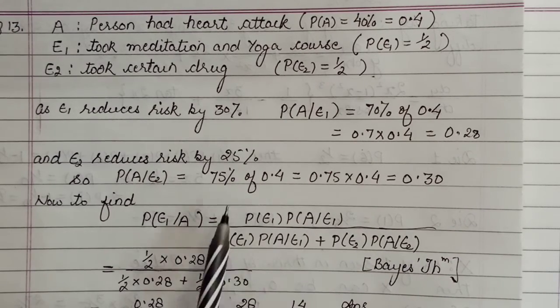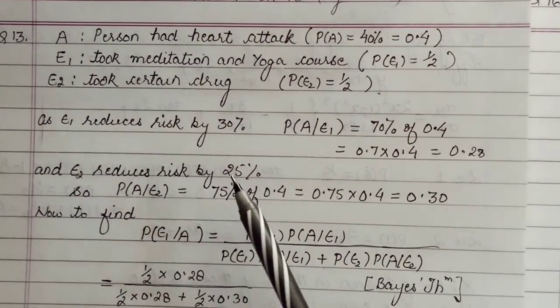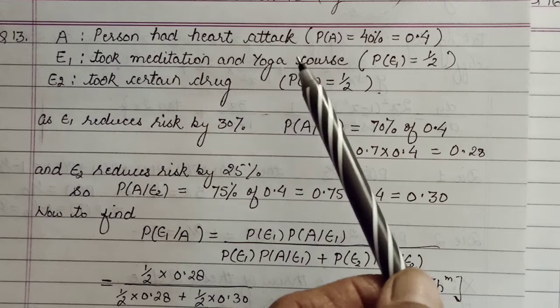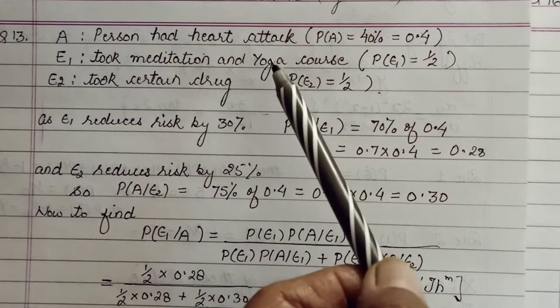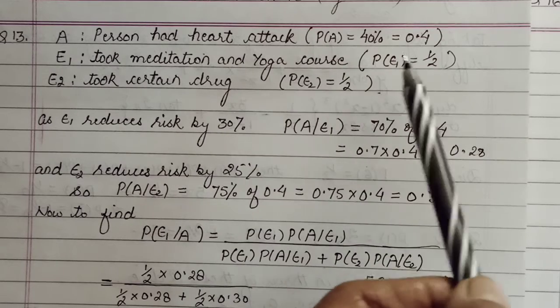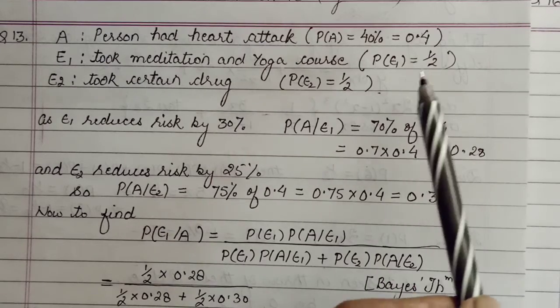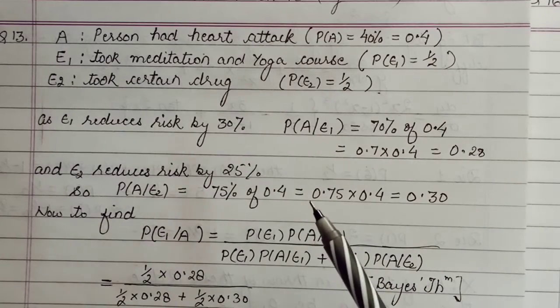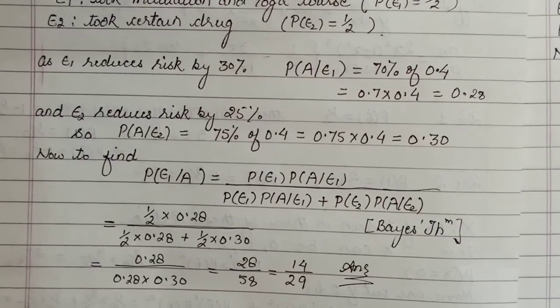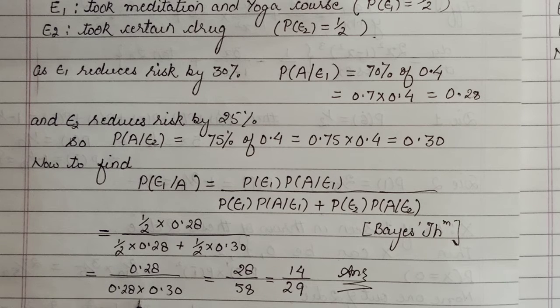All these probabilities we've already worked out. And yes, of course, it has been mentioned that there is equal option or equal probability chance that they can either take meditation or drug. So equal option probabilities are given, so that becomes 1/2, 1/2 each. So probability of E1 as well as E2 is half each, because you have equal opportunity of opting for any of the two. So put all those values here - half, half can be taken as common and cancelled. Plus this, so your probability is coming as 14 upon 29.